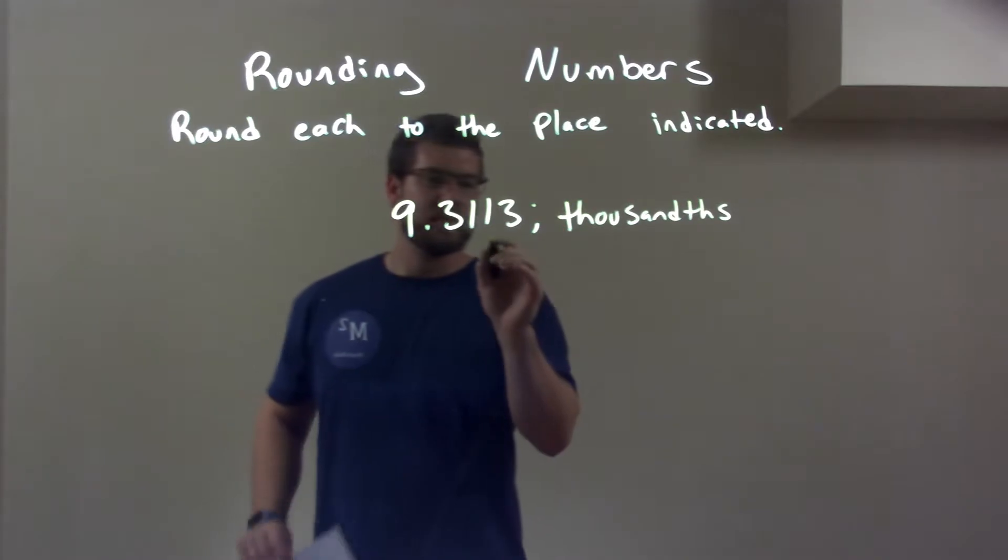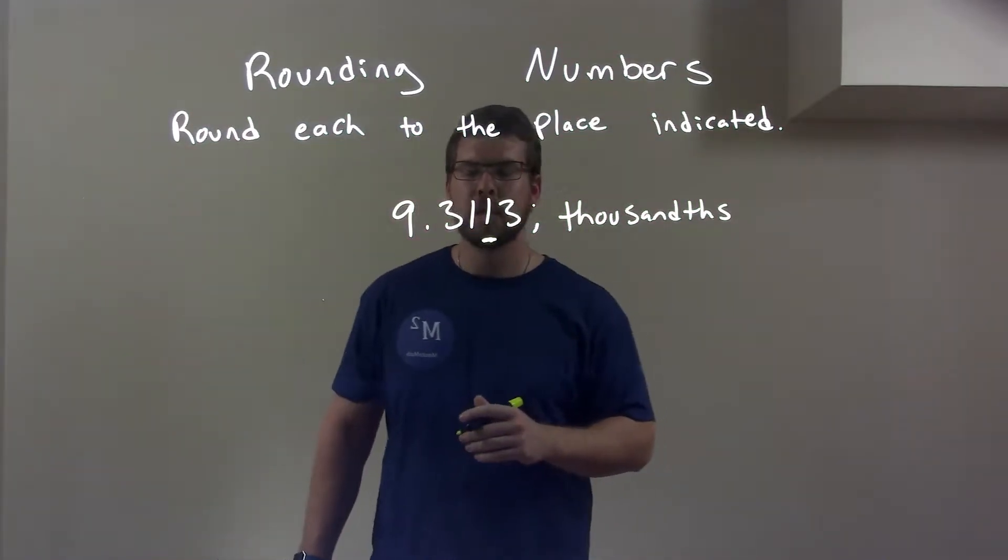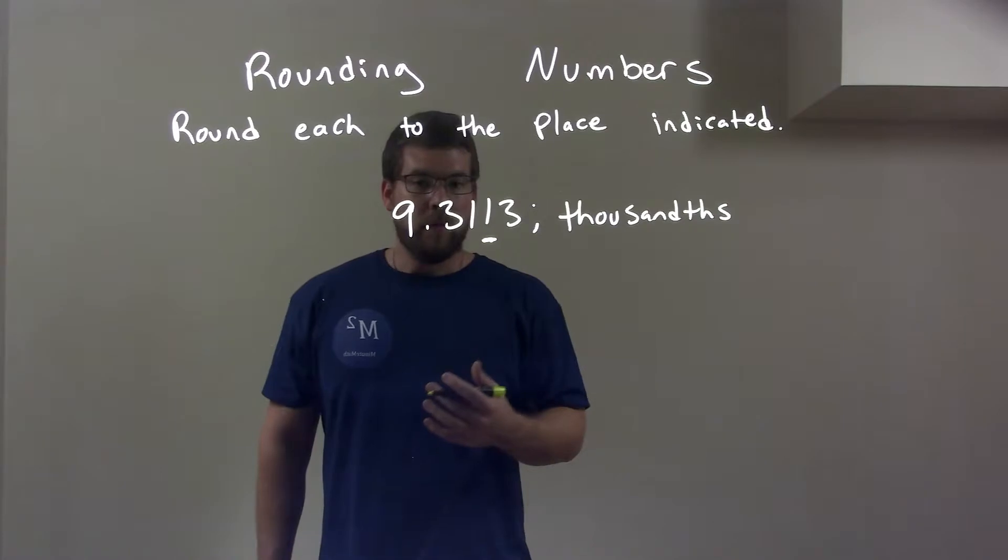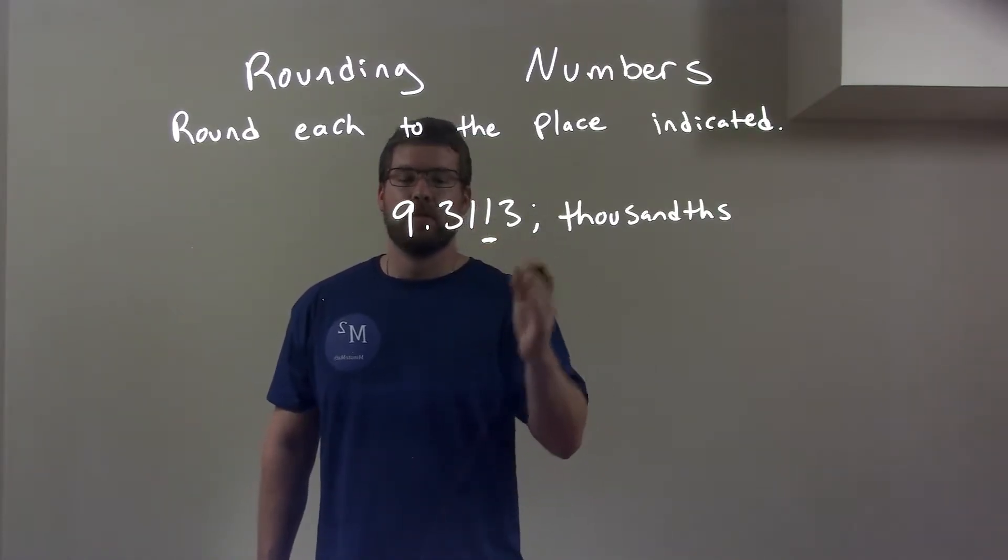Well, the thousandths place is right here on the second one. So when we round this, we take that one, we look to the right, and we see the three.